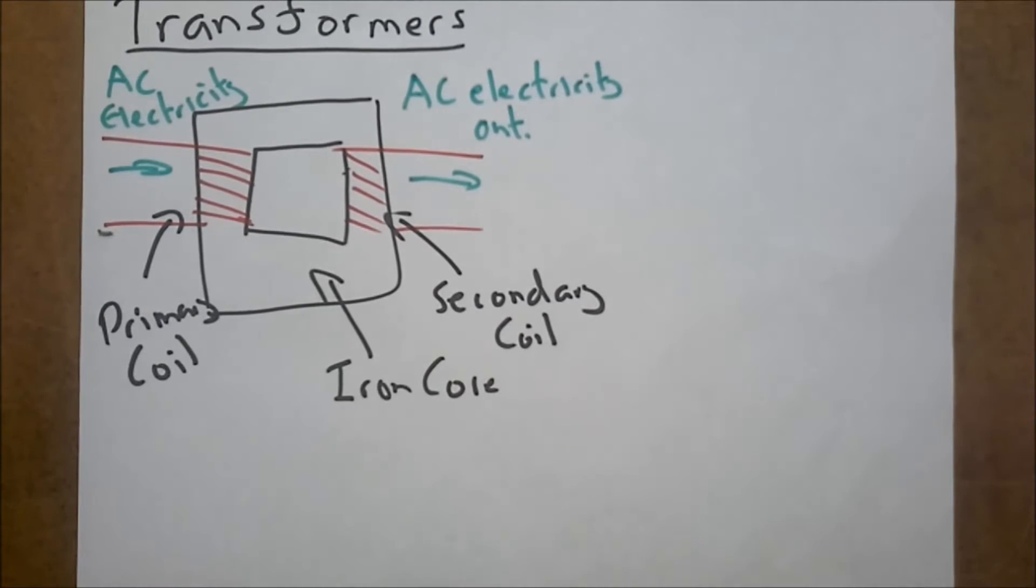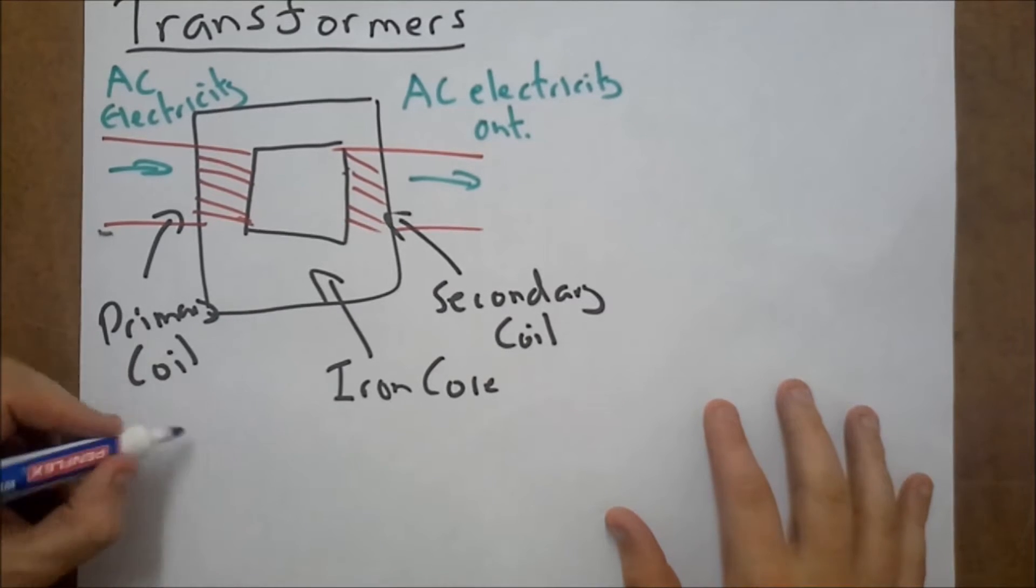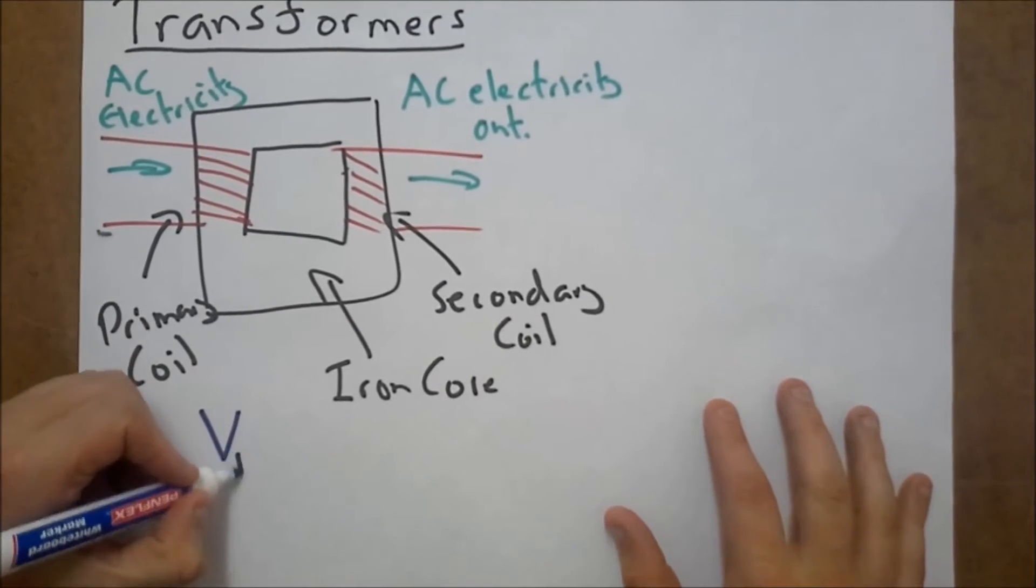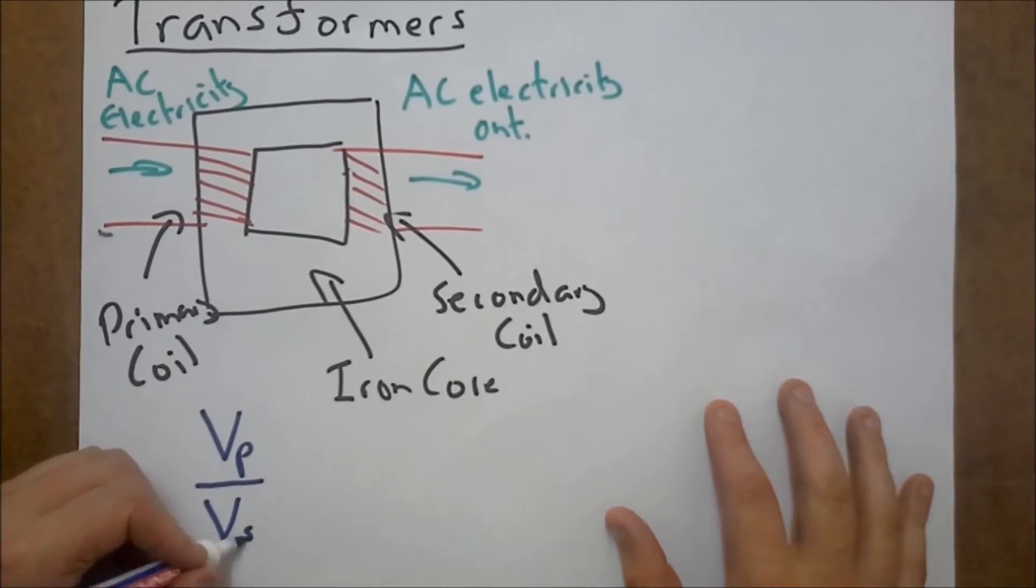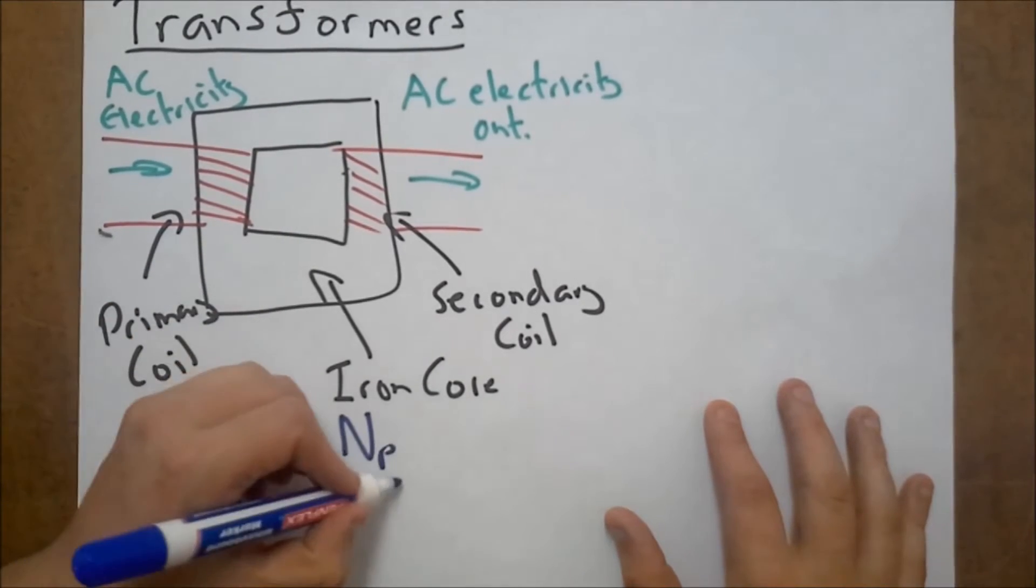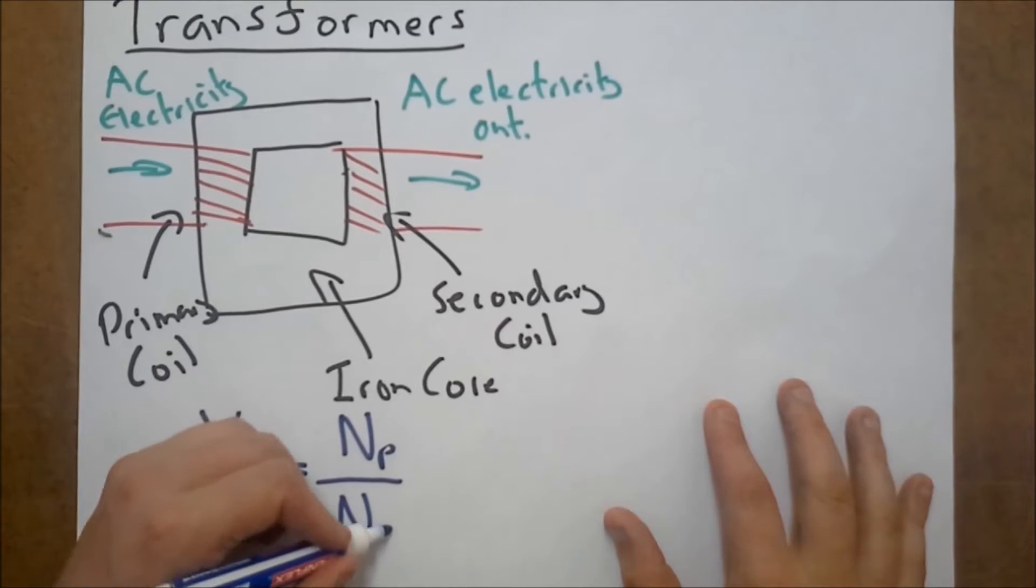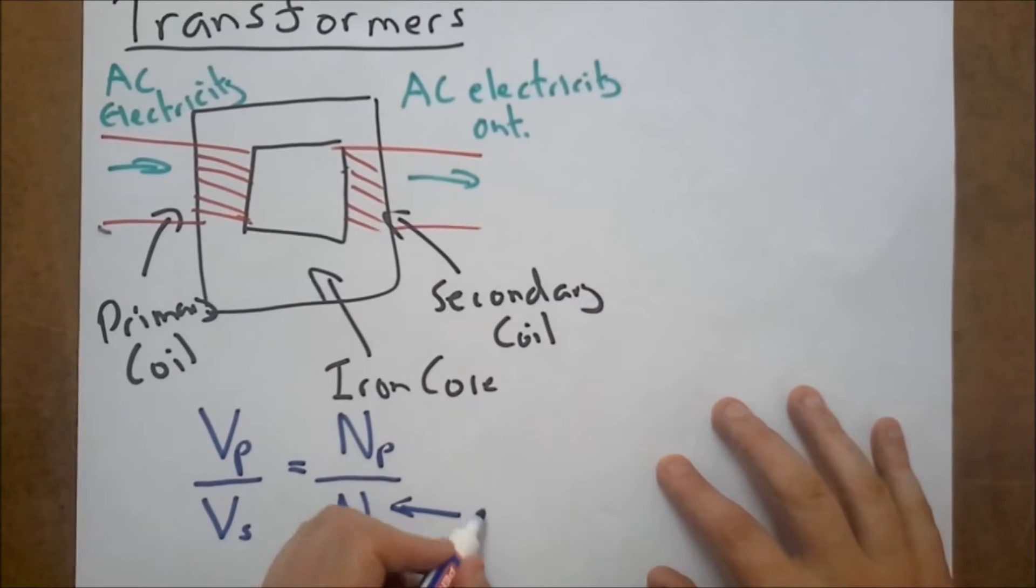Now, one of the equations that you have to learn for IGCSE physics is the voltage on the primary over the voltage on the secondary is equal to the number of coils on the primary divided by the number of coils on the secondary. This is the number of coils or the number of turns.